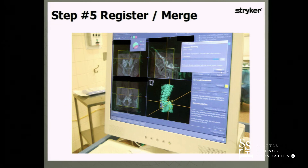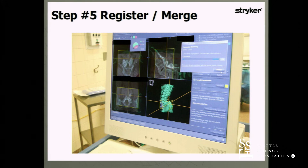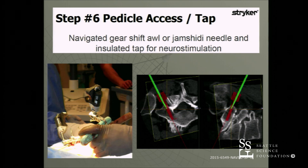This shows the registration process — we take the intraoperative spin and fuse it to the preoperative volumetric CT scan. The computer allows you to take the green image, which is the 3D spin from the OR, line it up to your volumetric CT as best possible, and then hit automatic correlation. The average time for the computer to complete this is about 19 seconds. Once done, the red image represents the planned screw trajectory, and the green image is the navigated instrument following that same pre-planned trajectory.